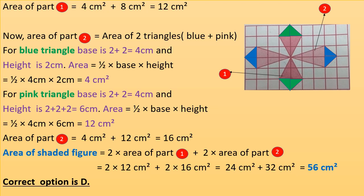Now the area of part two equals the area of two triangles — blue and pink. For the blue triangle, the base is 2 plus 2 equals 4 cm, since there are two squares along the base, and the height is 2 cm. Area equals half times 4 cm times 2 cm equals 4 cm squared.